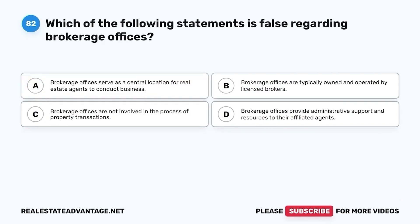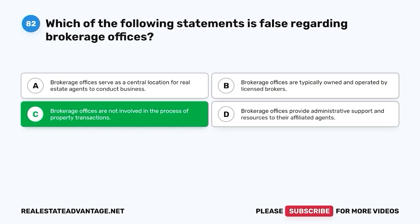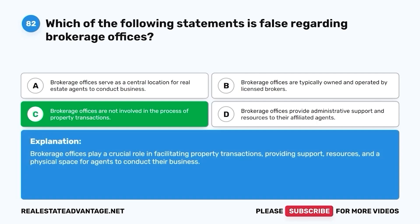Question 82. Which of the following statements is false regarding brokerage offices? A. Brokerage offices serve as a central location for real estate agents to conduct business. B. Brokerage offices are typically owned and operated by licensed brokers. C. Brokerage offices are not involved in the process of property transactions. D. Brokerage offices provide administrative support and resources to their affiliated agents. The correct answer is C. Brokerage offices play a crucial role in facilitating property transactions, providing support, resources, and a physical space for agents to conduct their business.